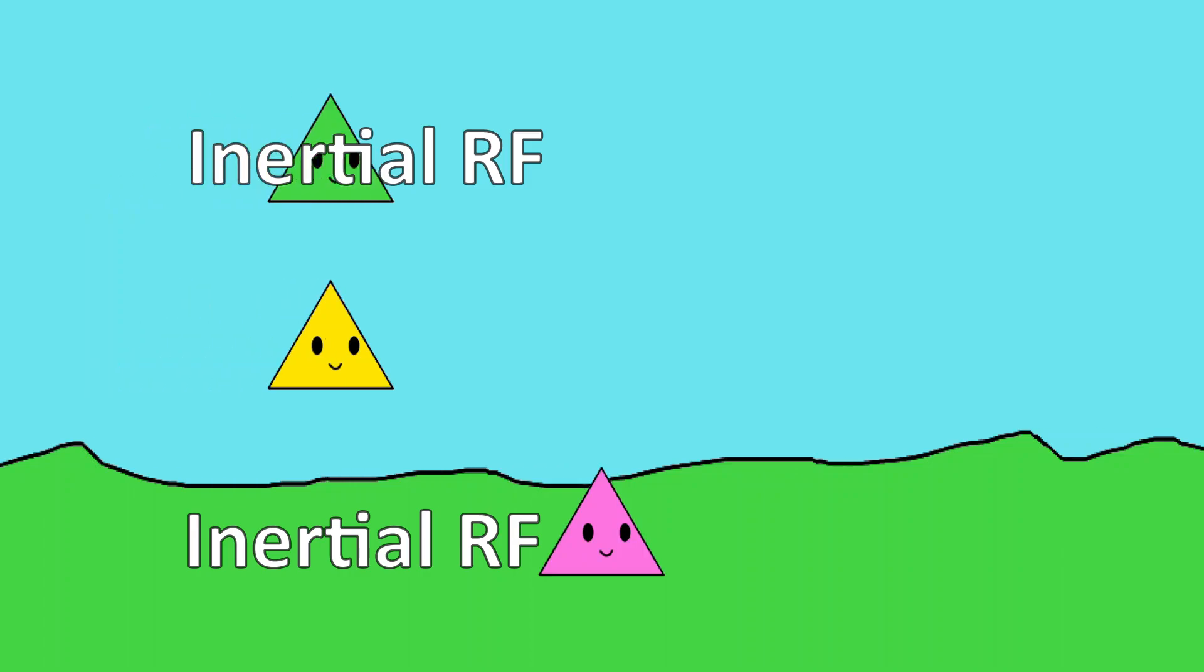An inertial reference frame is just a reference frame that isn't accelerating. In this example, A and B are inertial reference frames because they're each maintaining a constant velocity. C is not an inertial reference frame though, it's slowing down, which is a form of acceleration.